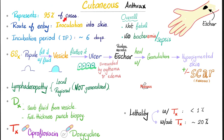Cutaneous anthrax — 95% of cases. Route of entry: inoculation. Incubation period: about 6 days. Signs and symptoms: we start with a papule, which is an elevated lesion elevated off the surface of your skin. Then filled with fluid — now it's called a vesicle. Then it becomes an ulcer. An ulcer is removal of the epithelium and its basement membrane. When only the epithelium is gone, it's called an erosion. So an ulcer is deeper than an erosion.